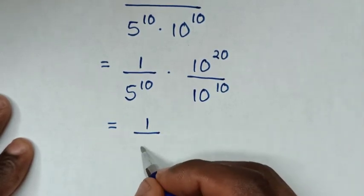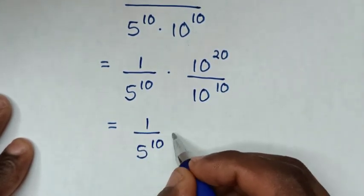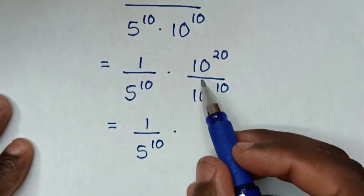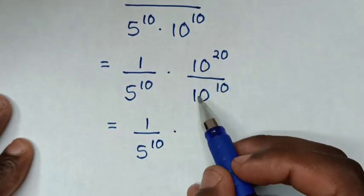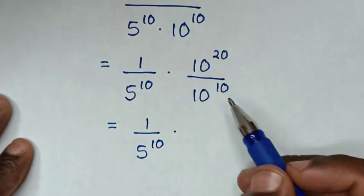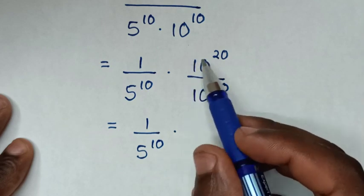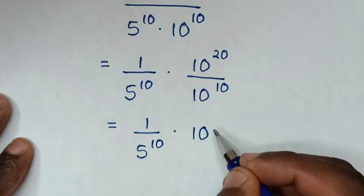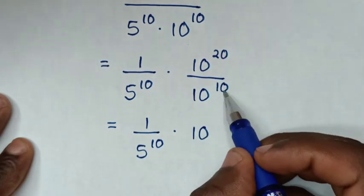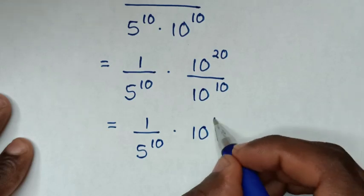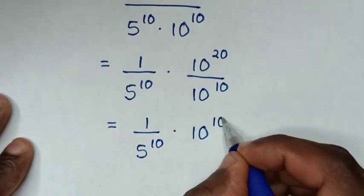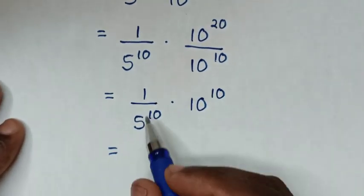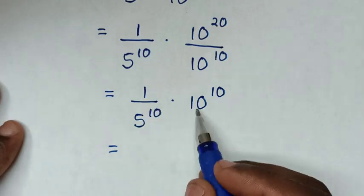It will be equal to 1 over 5 power of 10, then times — using division of exponents with same base but different power — same base of 10, power of 20 minus power of 10 is power of 10.